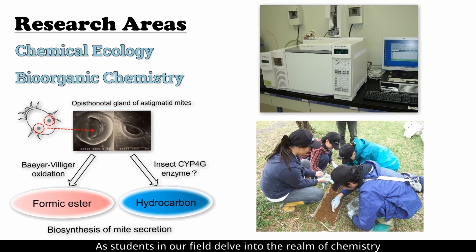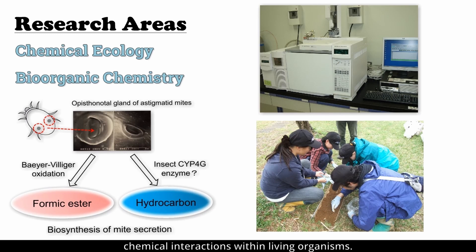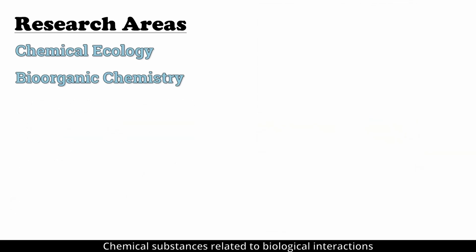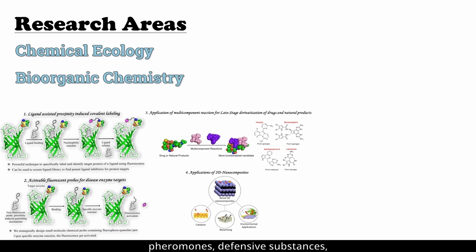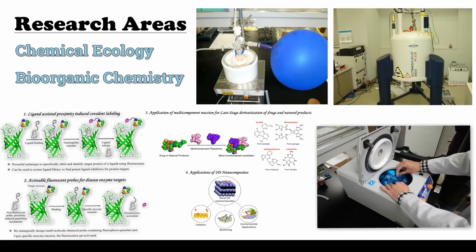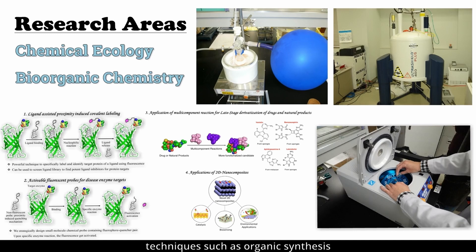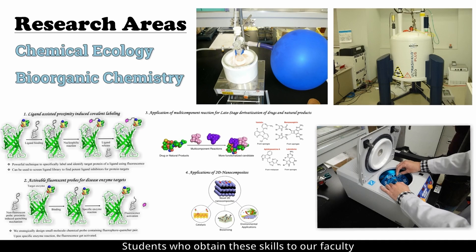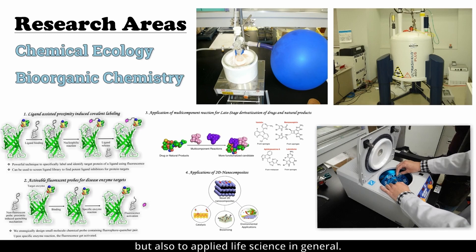As students in our field delve into the realm of chemistry, especially organic chemistry, they will explore the unknown world of chemical interactions within living organisms. Chemical substances related to biological interactions — for example, pheromones, defensive substances, and antibacterial substances — exhibit specific biological activities in very small amounts. Therefore, practical applications of these substances are anticipated. In order to find potential lead compounds for pharmaceuticals and agrochemicals, techniques such as organic synthesis and bioassays are required. Students who obtain these skills can expect to contribute not only to the fields of bioorganic chemistry and chemical ecology, but also to applied life science in general.